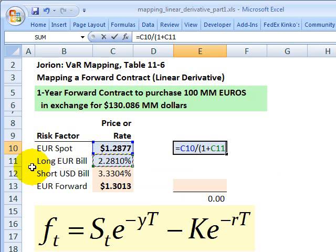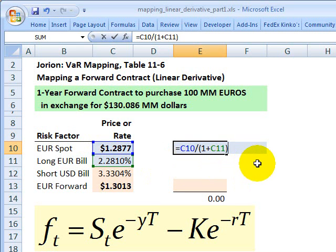Now in this case, Jorion calls that the long euro bill, but it's the foreign risk-free interest rate. And so in doing this formula right here, the spot rate discounted on an annual frequency by the foreign risk-free rate, I get this value for the left-hand side, or at least this part right here.